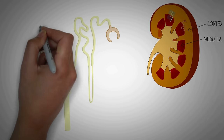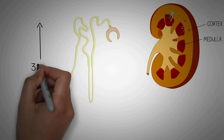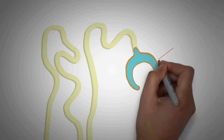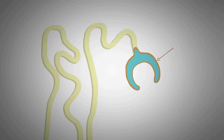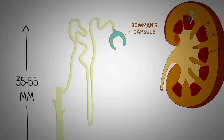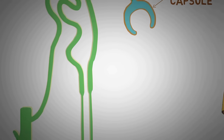The nephron is a tube-like structure whose length varies from 35 to 55 mm, and the structure of the nephron can be basically divided into two major portions: the Bowman's capsule and the renal tubule.